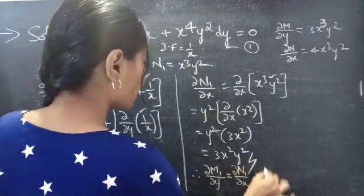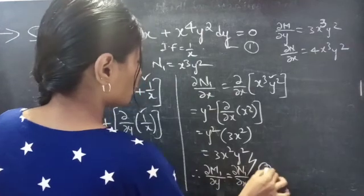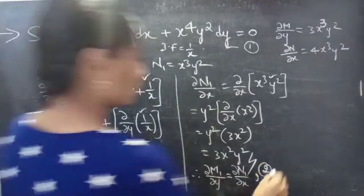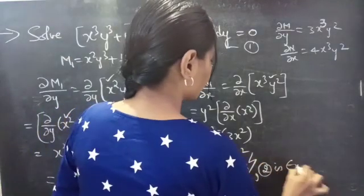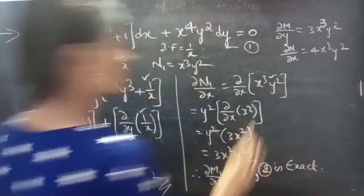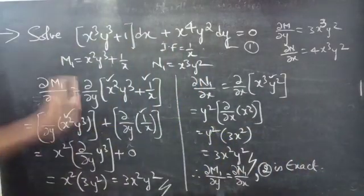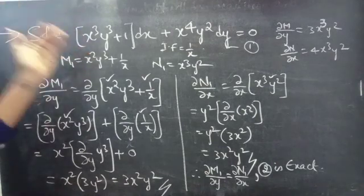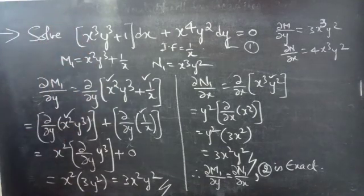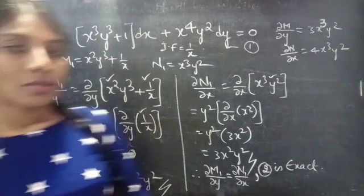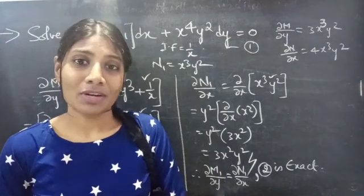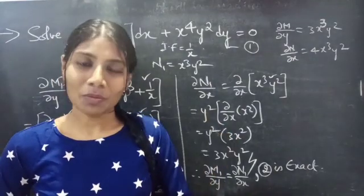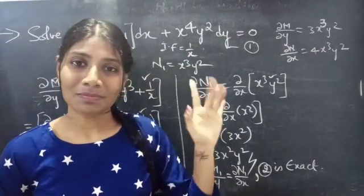Therefore, equation 2 is exact, which confirms that after multiplying the integrating factor to the given equation, the equation is reduced to an exact equation. The verification is done. So we have solved a problem on non-exact equations in this video. Hope you understand. We will see you in the next video. Bye-bye.